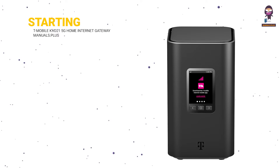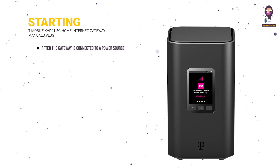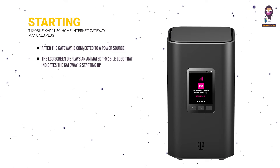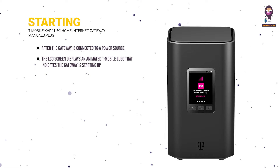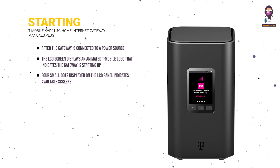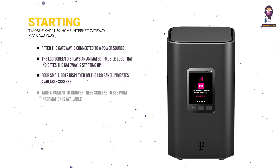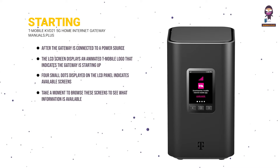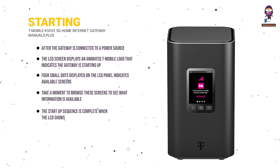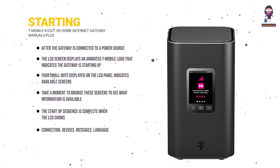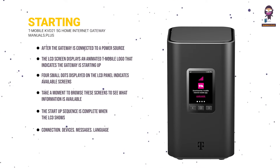Starting the T-Mobile 5G Gateway: after the gateway is connected to a power source, the LCD screen displays an animated T-Mobile logo indicating the gateway is starting up. Four small dots displayed on the LCD panel indicate available screens. Take a moment to browse these screens. The startup sequence is complete when the LCD shows: Connection, Devices, Messages, and Language.